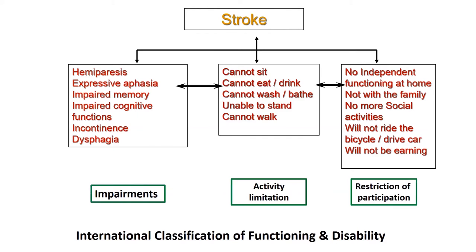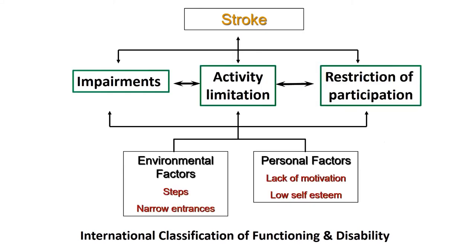The participation restrictions include no independent functioning at home with family, no social activities, inability to ride a bicycle or drive a car, and if they were the sole breadwinner, inability to earn. Environmental factors such as steps at the entrance or narrow washroom access may prevent use of a walking frame or wheelchair. Personal factors like lack of motivation or low self-esteem also influence the level of independence.